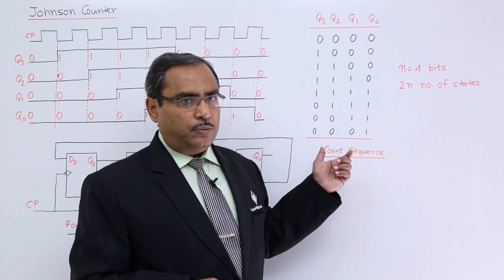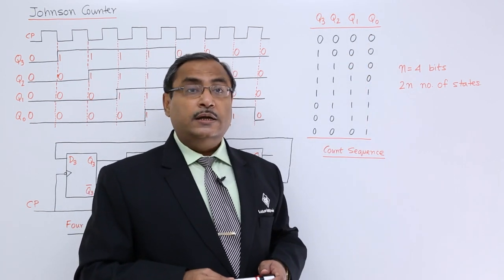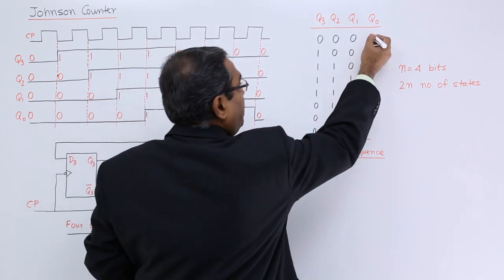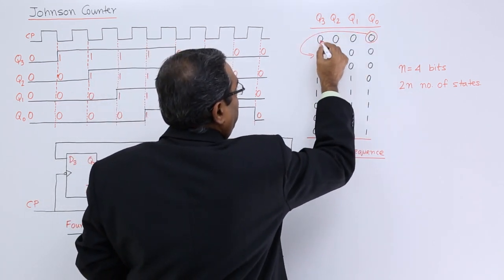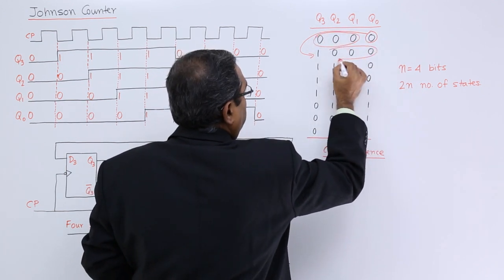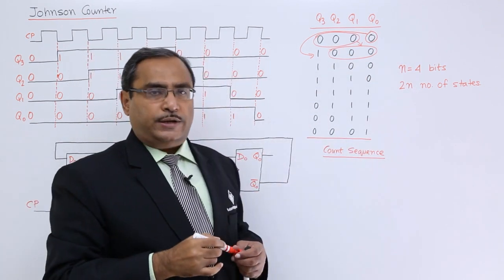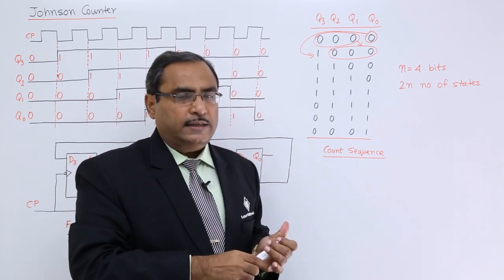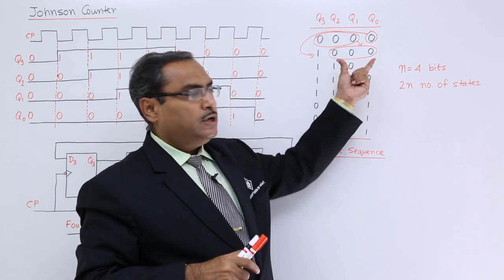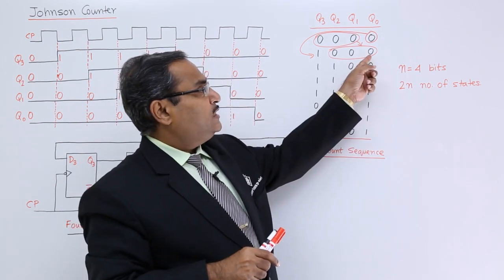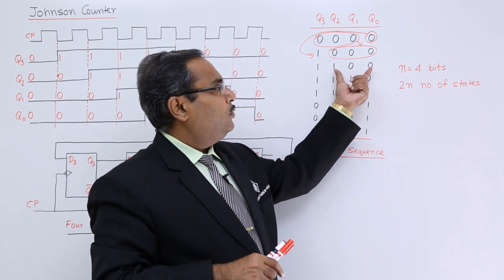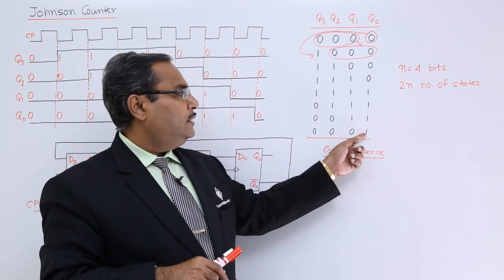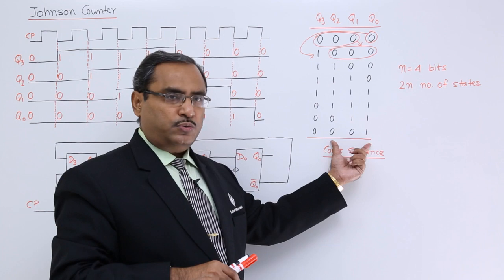Johnson counter can also be called as switch tail counter because here this last bit — the switch tail — that is the last bit of this counting state, will be complemented. It will be coming to the MSB place and the remaining 3 bits will be shifted towards the right. The last bit will be complemented and that bit will be shifted to the most significant bit place, and those 3 bits will be shifted towards the right by 1 bit position. Again this bit will be complemented and in this way the Johnson counter will work.